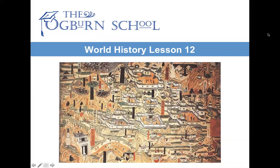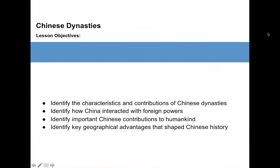Welcome to World History Lesson 12: Chinese Dynasties. Our lesson objectives are to identify the characteristics and contributions of Chinese dynasties, identify how China interacted with foreign powers, identify important Chinese contributions to humankind, and identify key geographical advantages that shaped Chinese history.